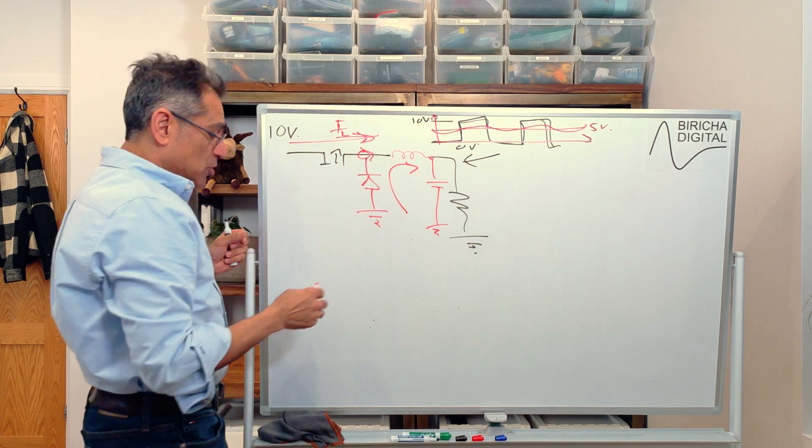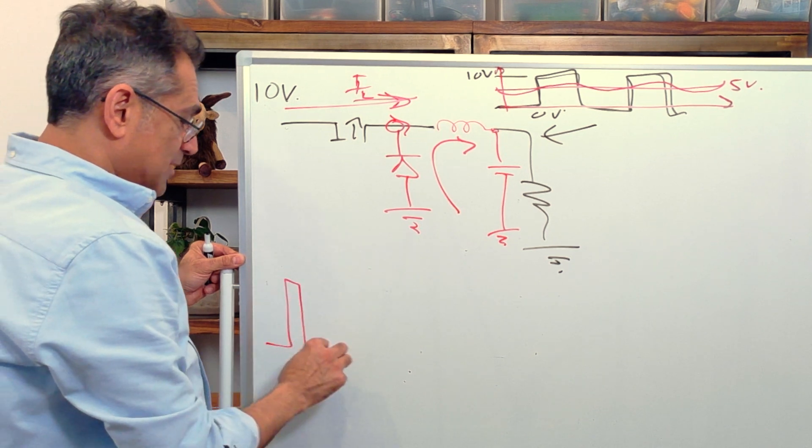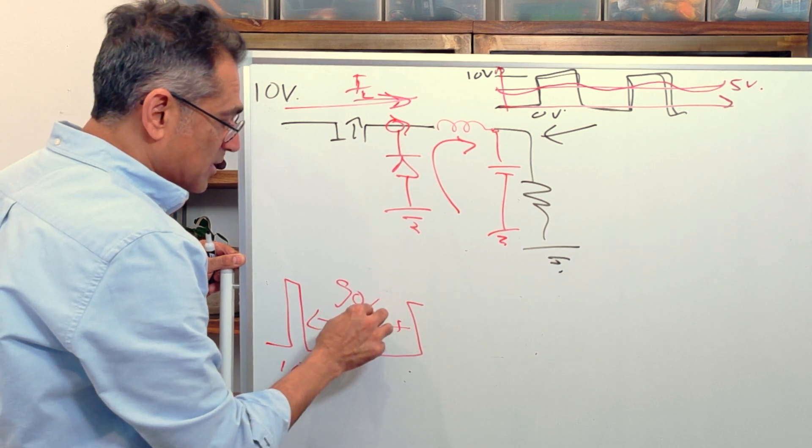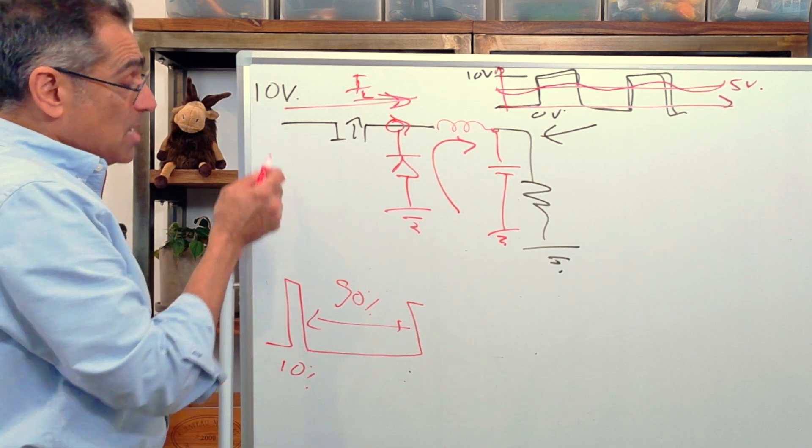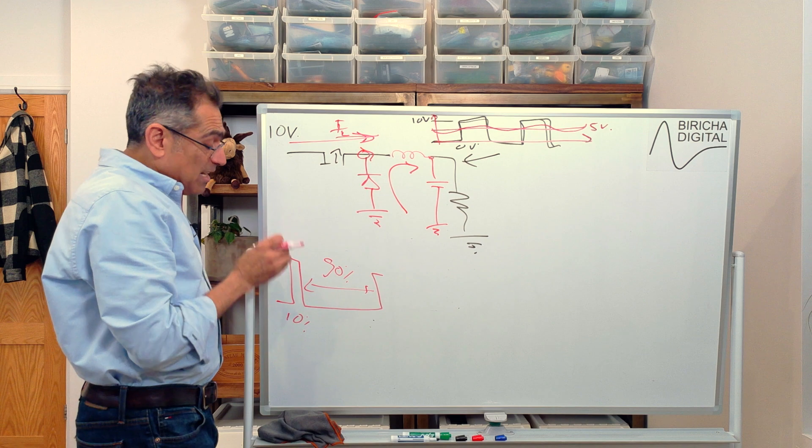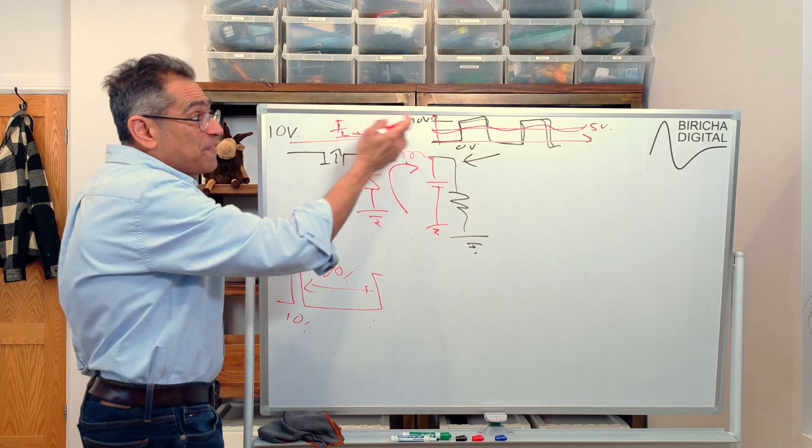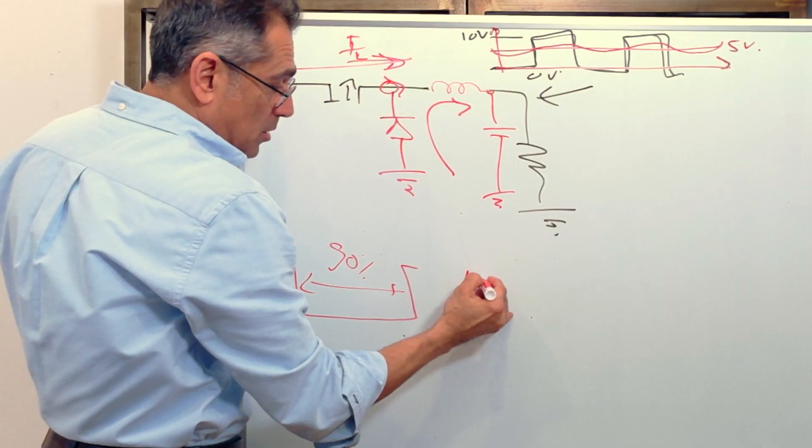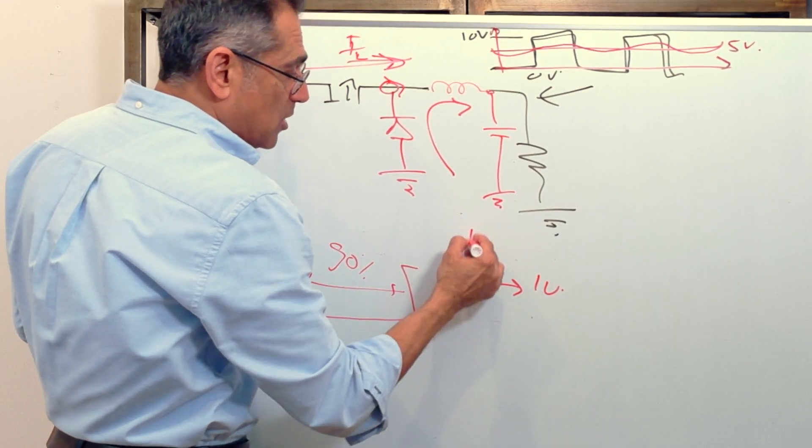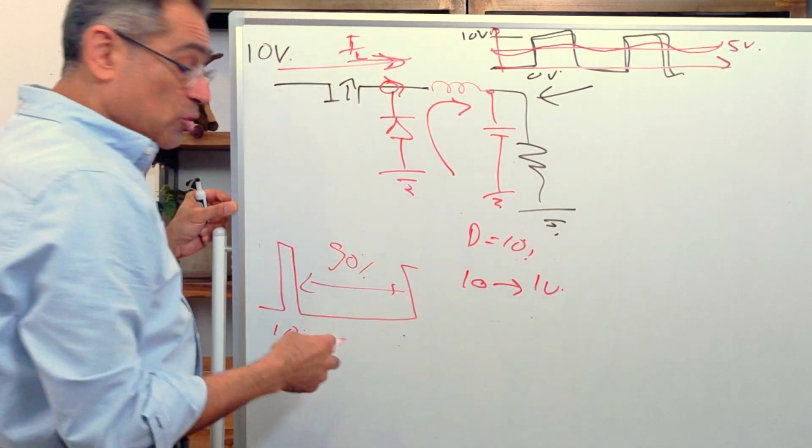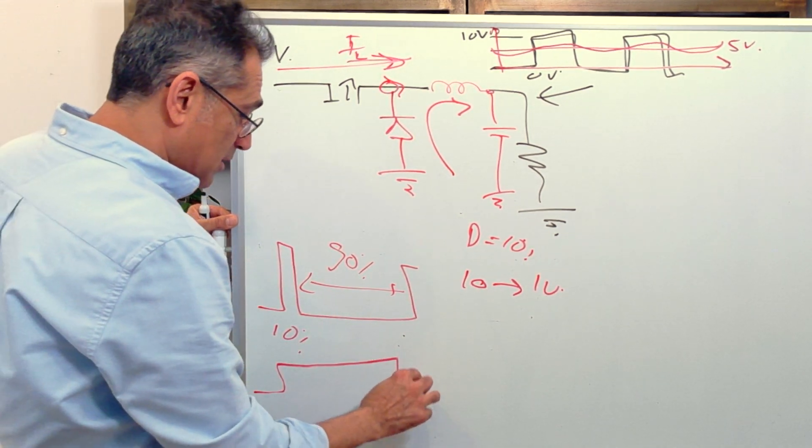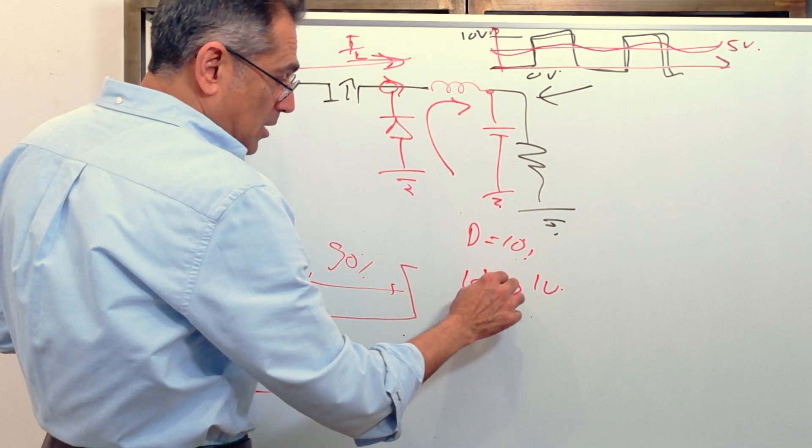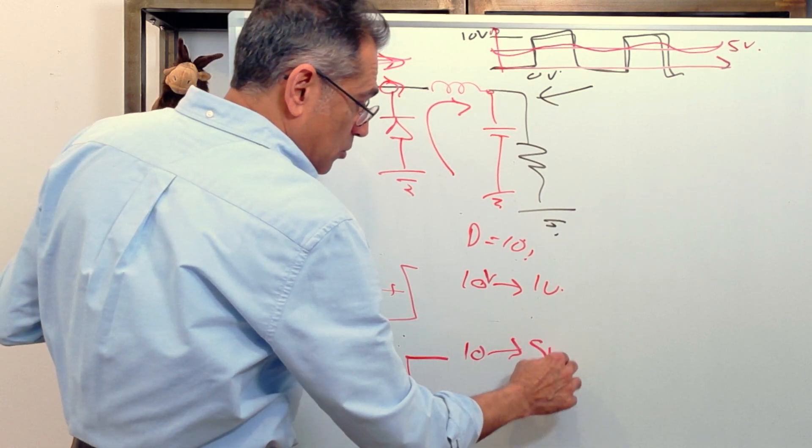Of course you don't have to have a duty of 50%. If you have a duty of 10%, so you turn it on for 10% of the time and you turn it off for 90% of the time, then with an input voltage of 10 volts, you are only delivering energy for 10% of the time. You are filtering this flicker and you end up with 1 volt. 10 volts will step down to 1 volt because your duty is 10%. If you do it the other way around, so you keep the switch on for 90% of the time and off for 10% of the time, then your 10 volts will fall down to 9 volts.